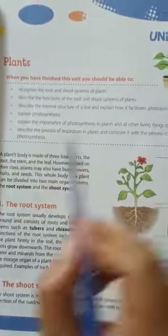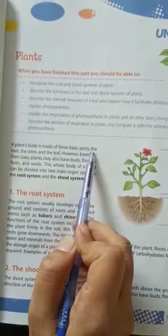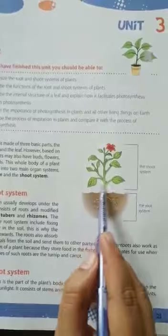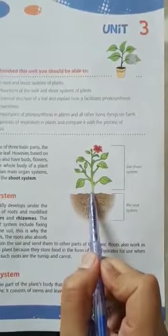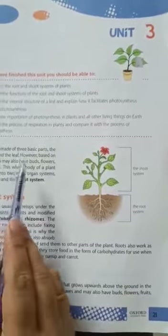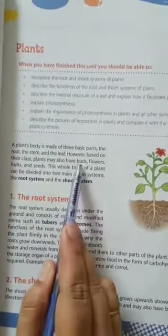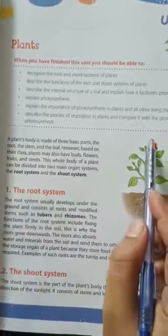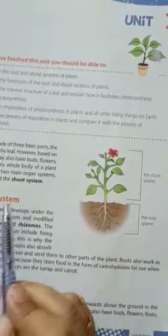A plant's body is made of three basic parts: the root, the stem, and the leaf. So plant ka aapko malum hai ki it is made up of three basic parts — these are the roots, the stem, and the leaves. However, based on their class, plants may also have buds, flowers, fruits, and seeds. Some plants have flowers, some have buds, some only have seeds — all plants are different.